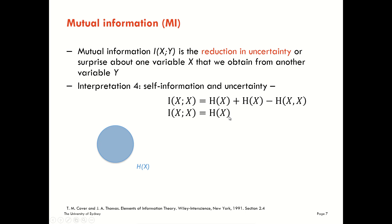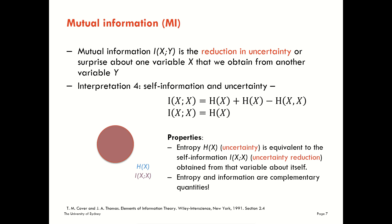That makes sense because we learn full information from x about itself — the uncertainty reduction we get from x is equal to the full uncertainty we had about x in the first place. So the entropy about x is equivalent to the self-information, the uncertainty reduction obtained from that variable about itself. In this way we see that entropy and information are complementary quantities, which is why we often use the terms entropy and information interchangeably, even though strictly speaking we probably shouldn't.